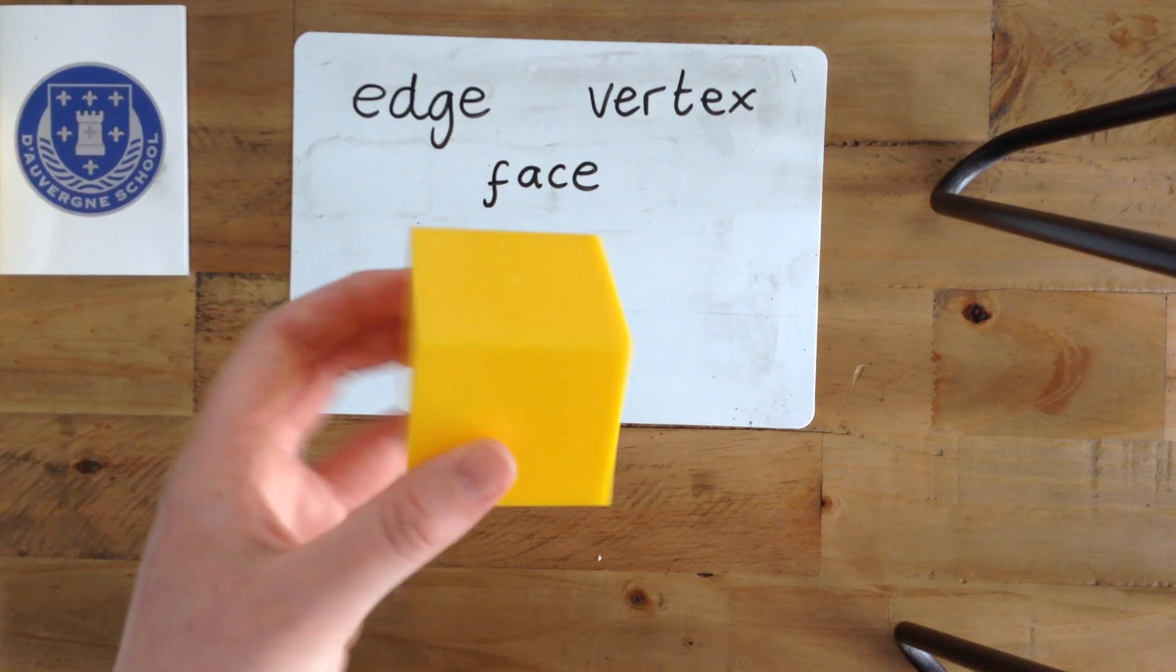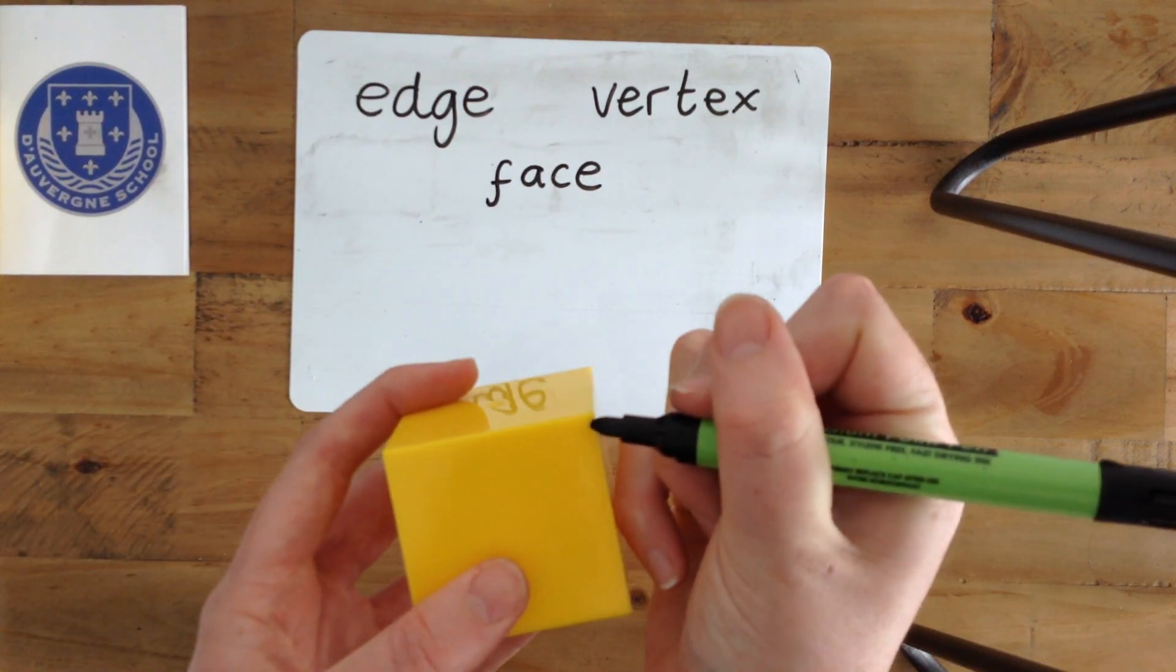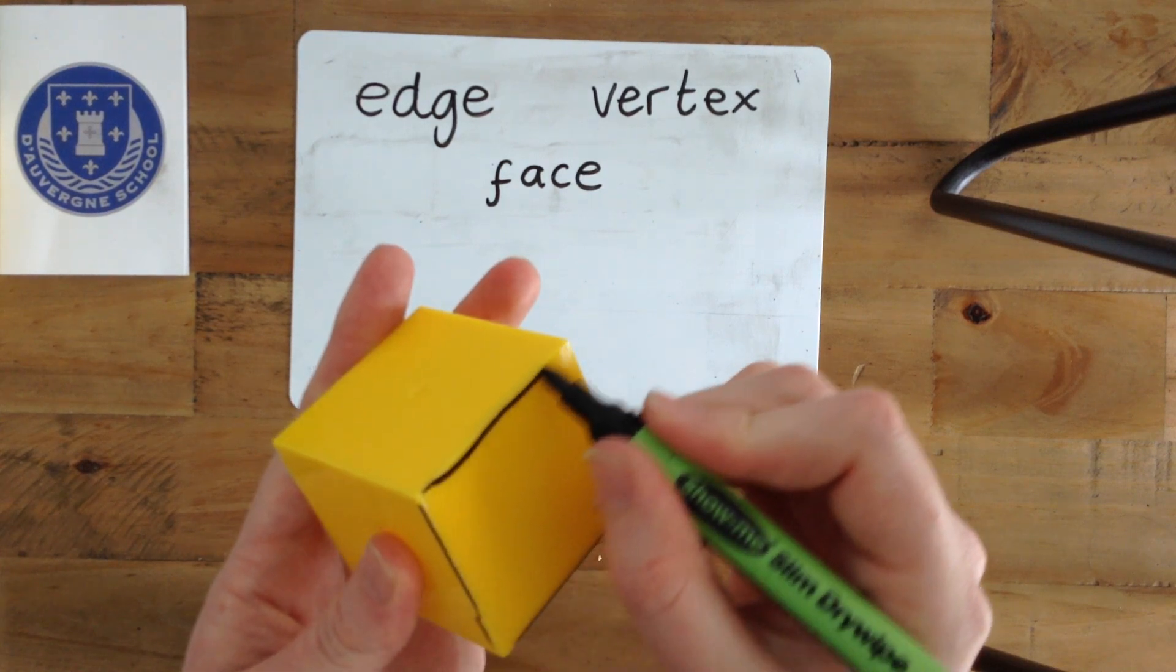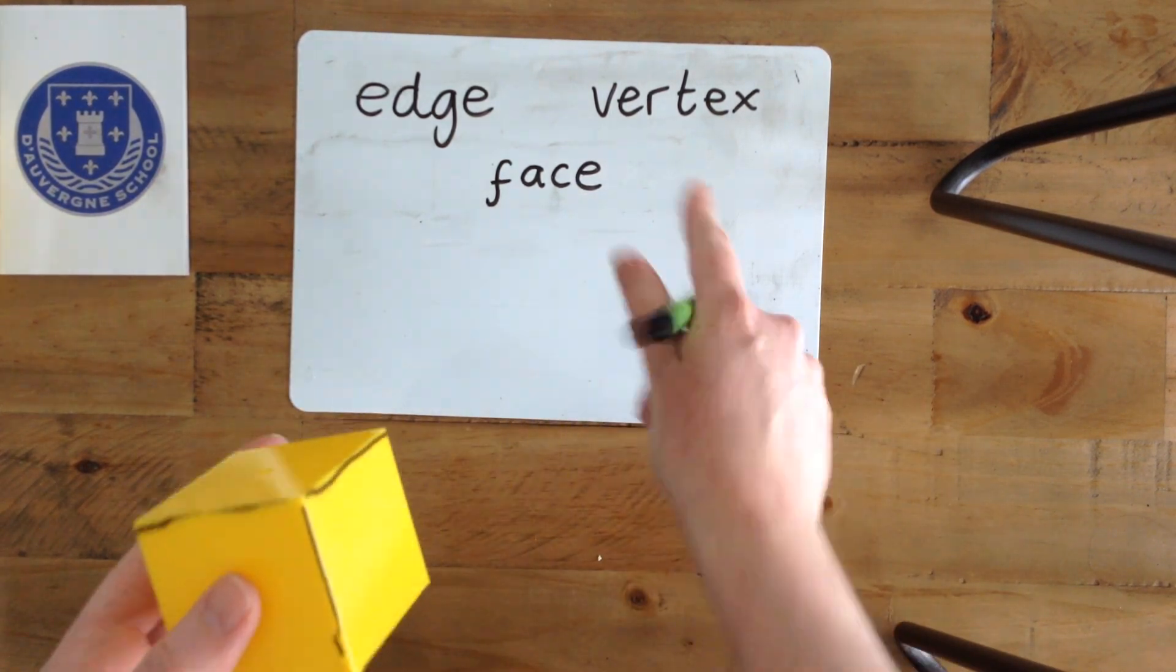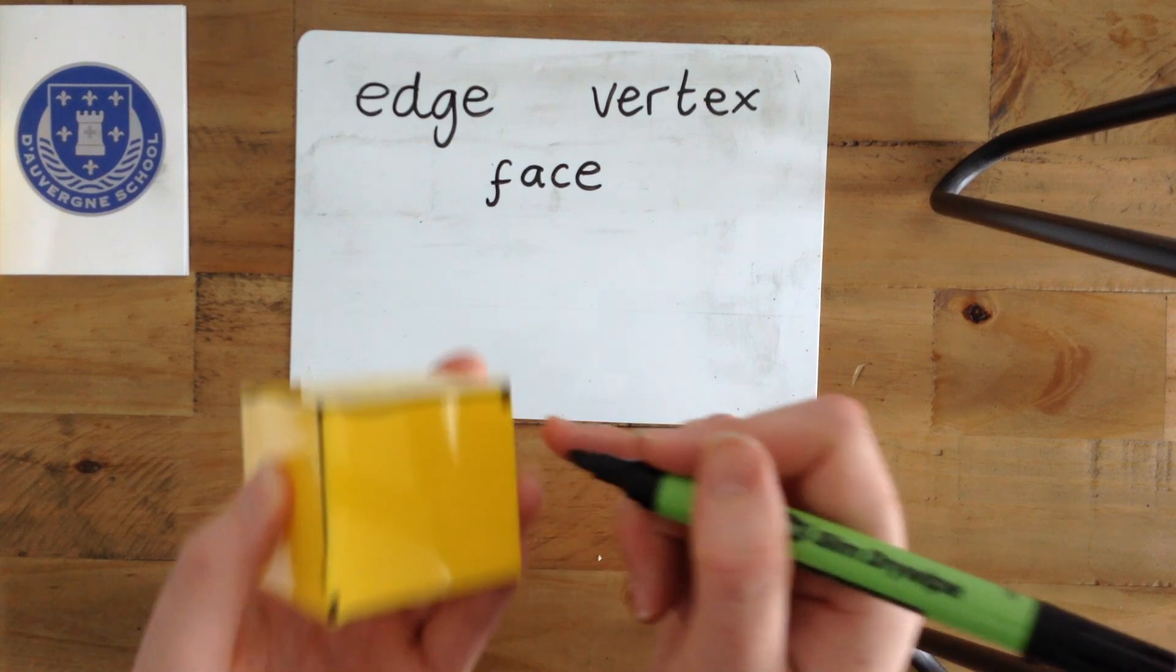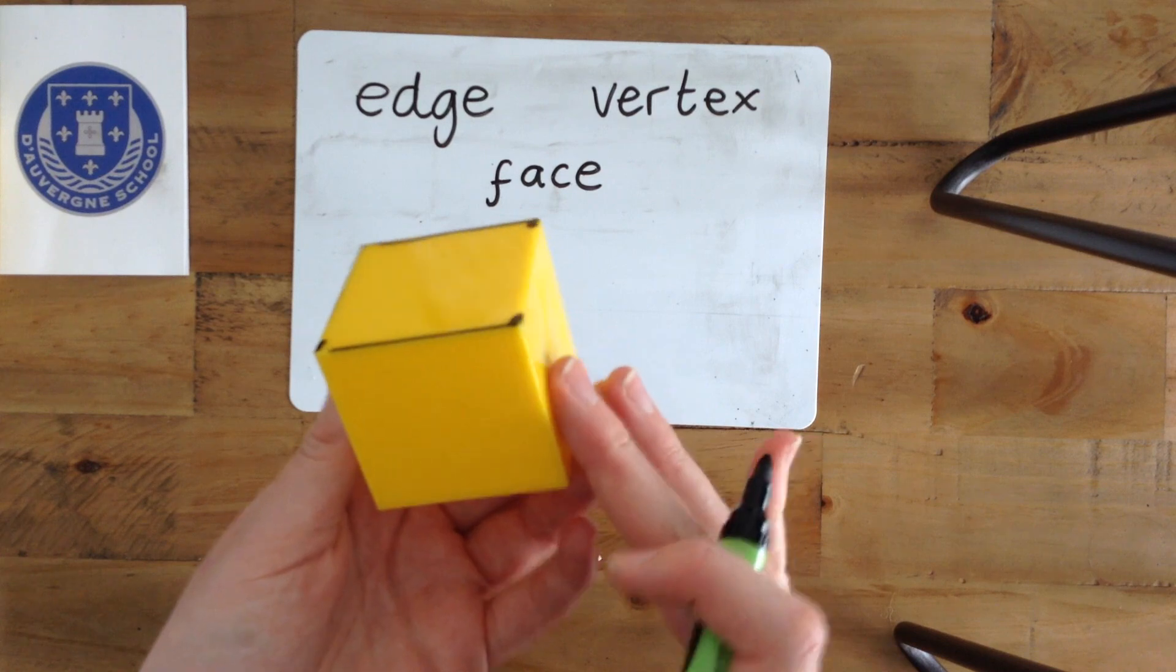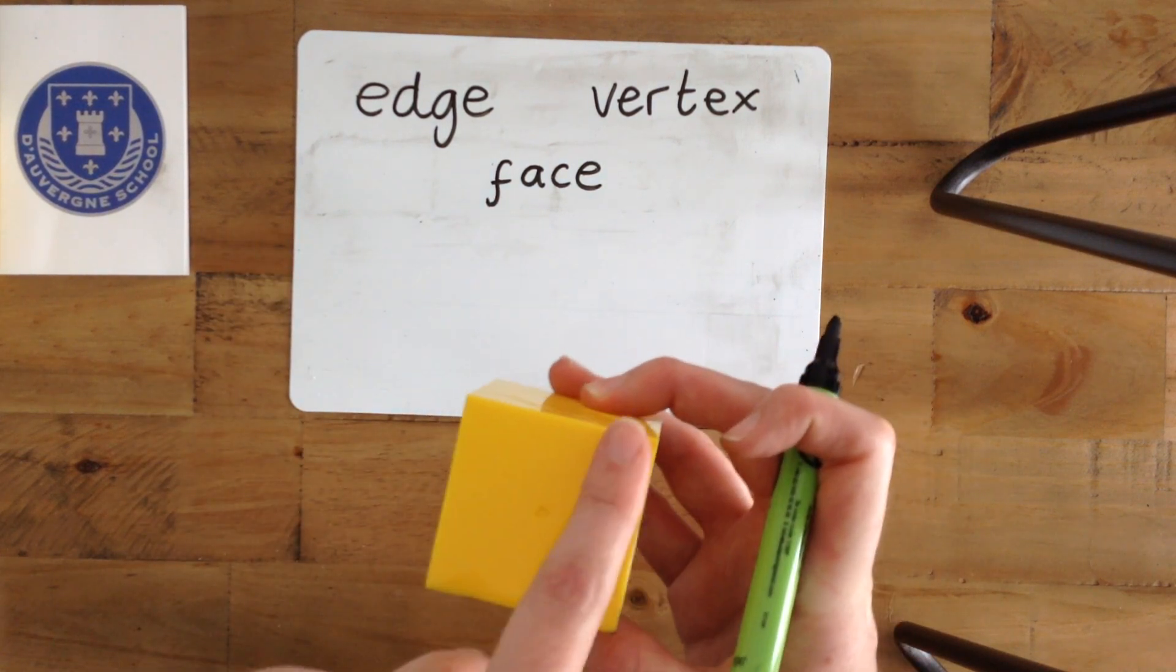Let's have a look at our cube. These are our edges—they go right around the cube. We've got our vertices here. And we have our faces. We know the faces of our cube are all square.